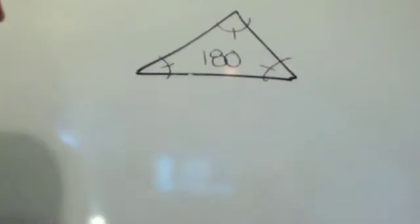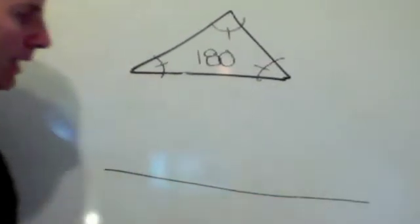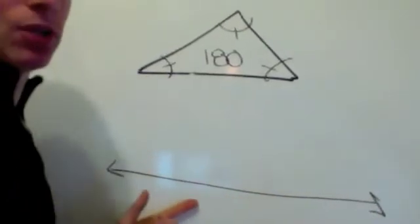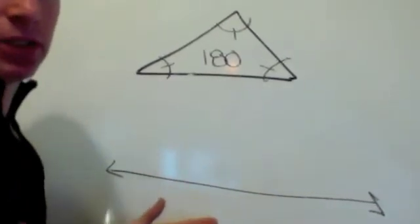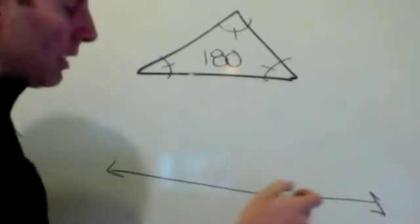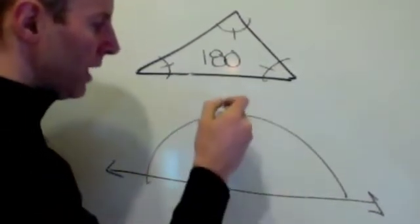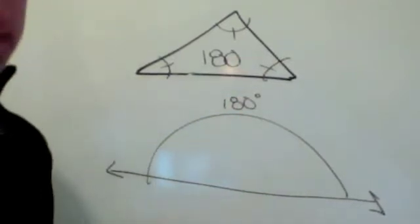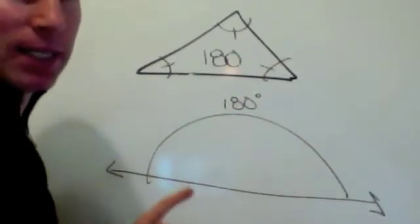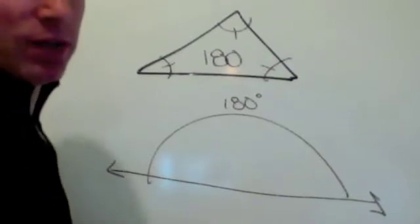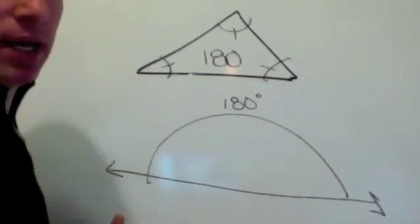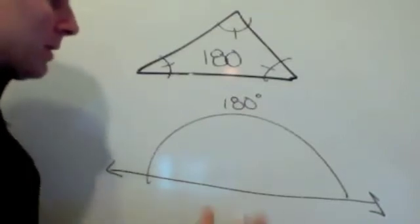The second math fact, if you have a straight line, by the way, a straight line we sometimes consider a straight angle, because a straight angle is made up of 180 degrees. So any line, if you think about it, it's a semicircle, it's made up of 180 degrees. You could think of a line as a straight angle, always having 180 degrees.